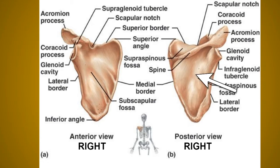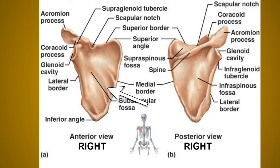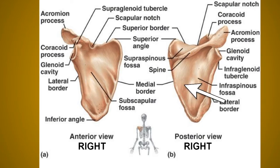Now, the features of the scapula: first, the surfaces. The scapula has two surfaces — the dorsal and the costal surface. The costal surface, or subscapular fossa, is concave and directed medially and forwards. It is marked by three longitudinal ridges, and another thick ridge adjoins the lateral border. This part of the bone is almost rod-like and acts as a lever for the action of the serratus anterior muscle in overhead abduction of the arm.